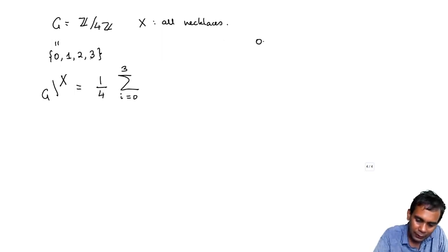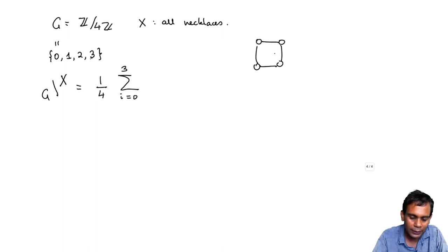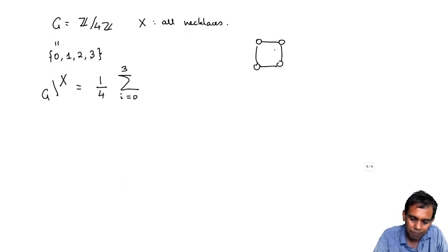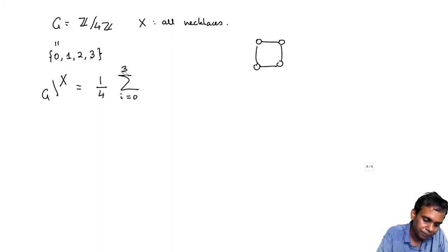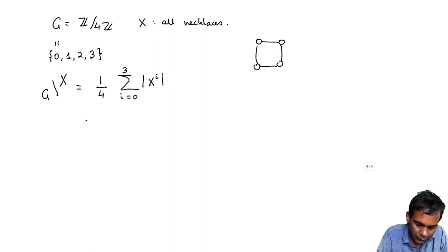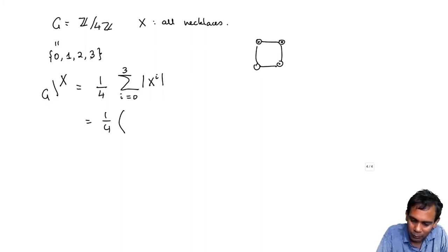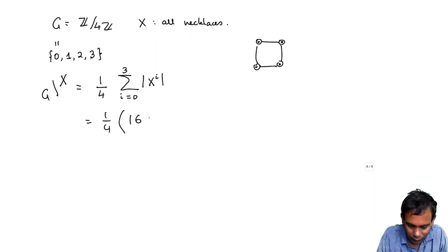For the identity element i = 0: the identity does nothing to any necklace, so all possible necklaces are fixed. Since I can color each of the four beads independently red or blue, I get 2 to the power 4, which is 16, for i = 0.